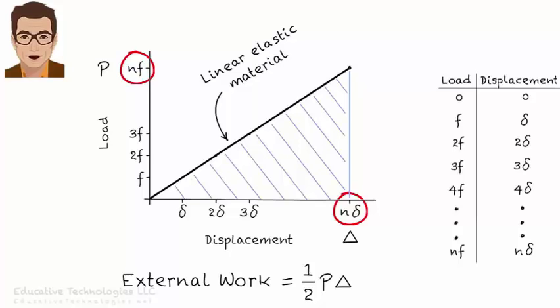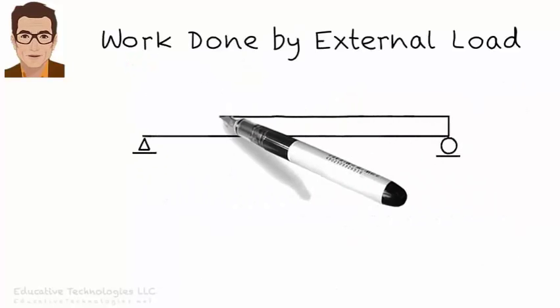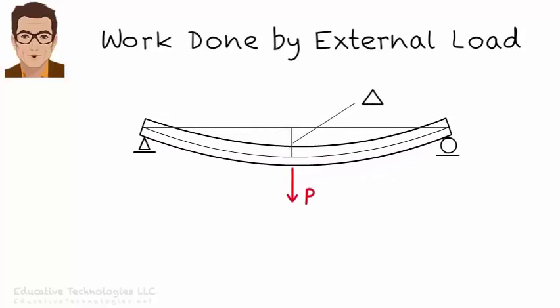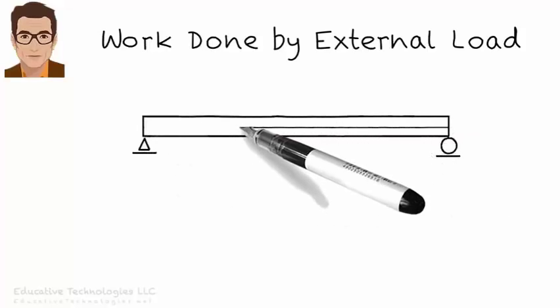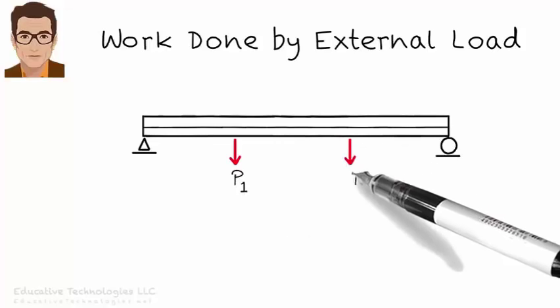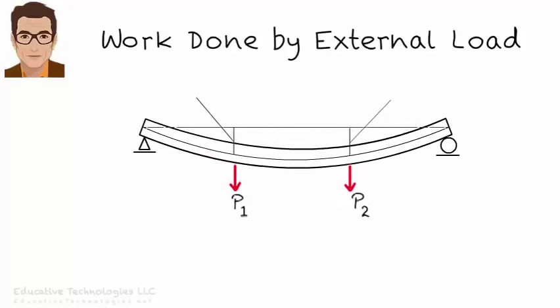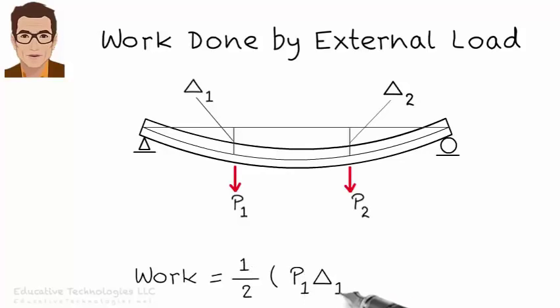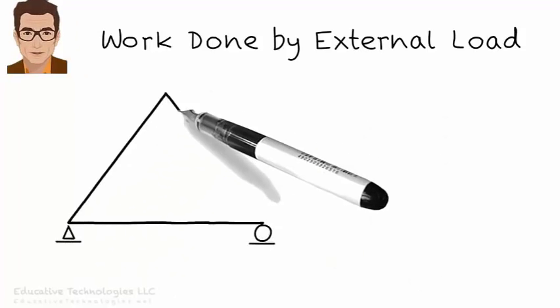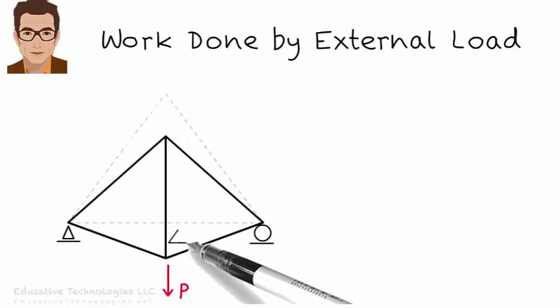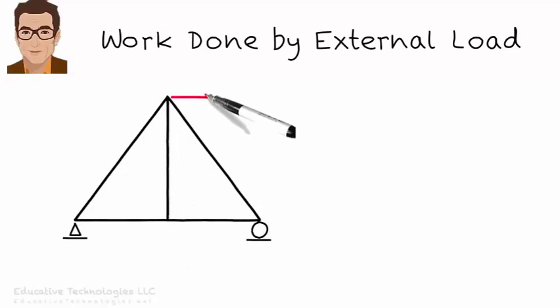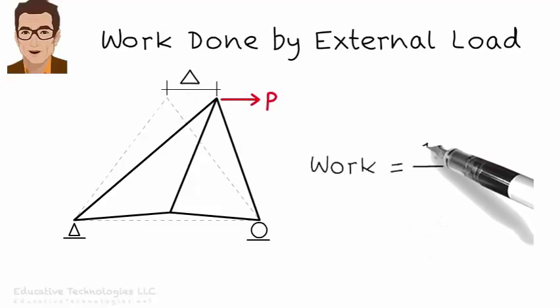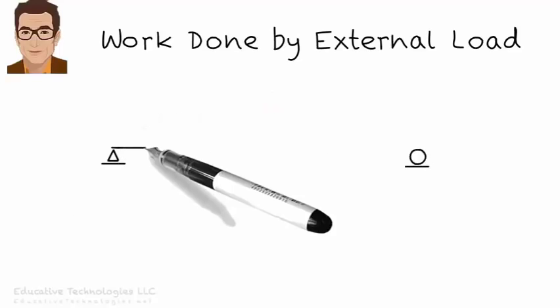Before we proceed further, let's visualize external work in a few problems. Here the work done by P is one half P delta. Here the total work done by the applied loads is one half P1 delta 1 plus P2 delta 2. Similarly, here we can write work as one half P delta. And here work is one half P delta.